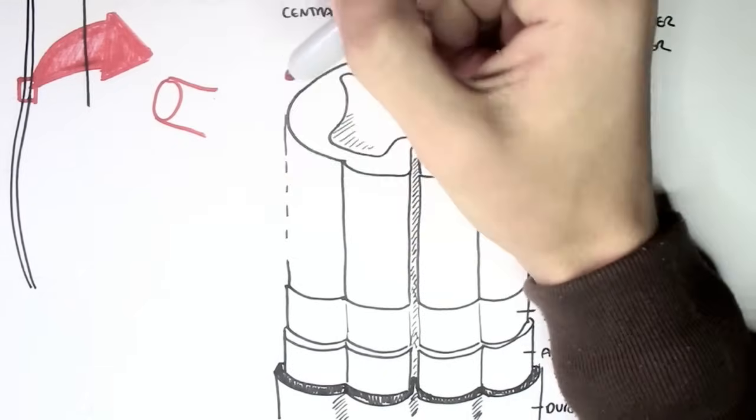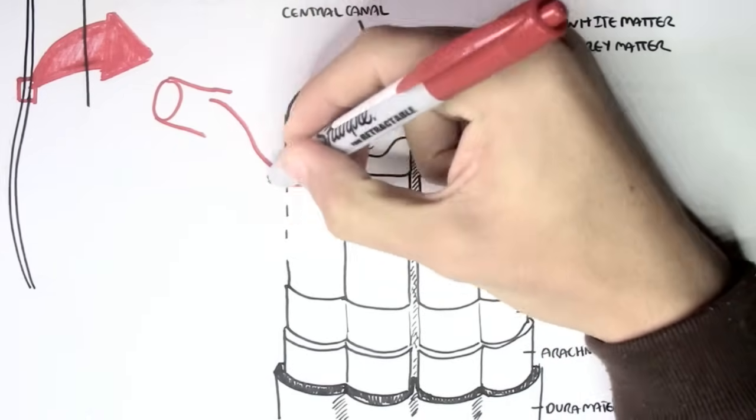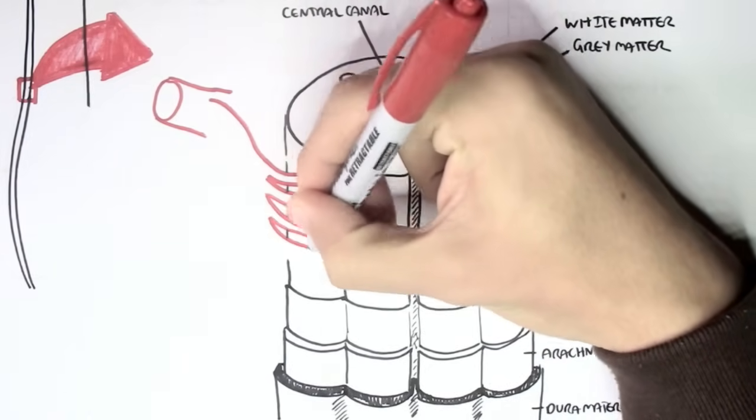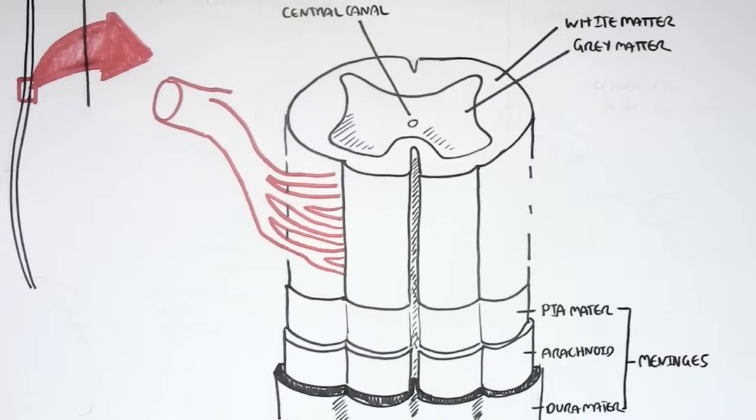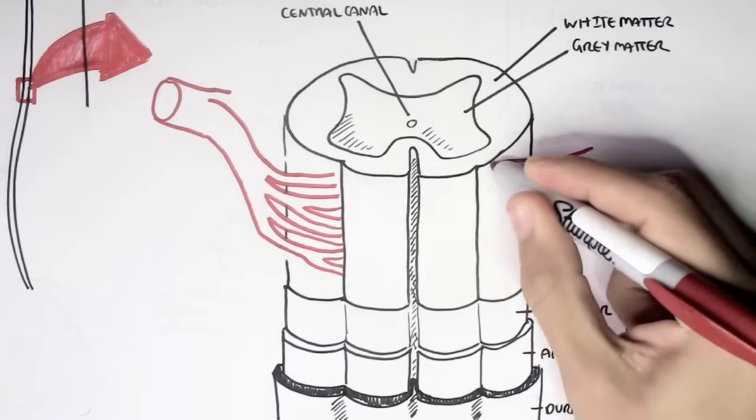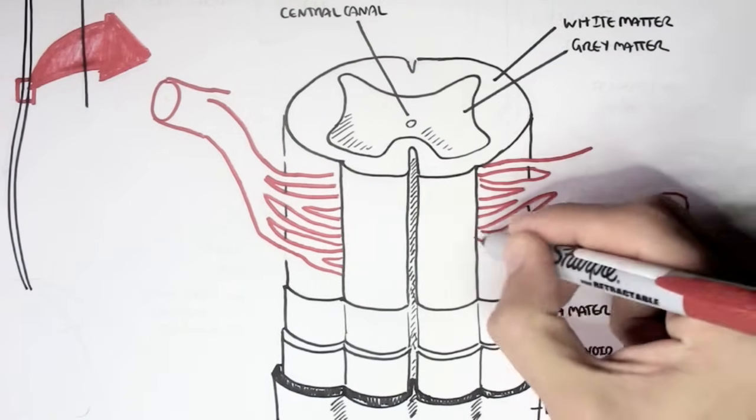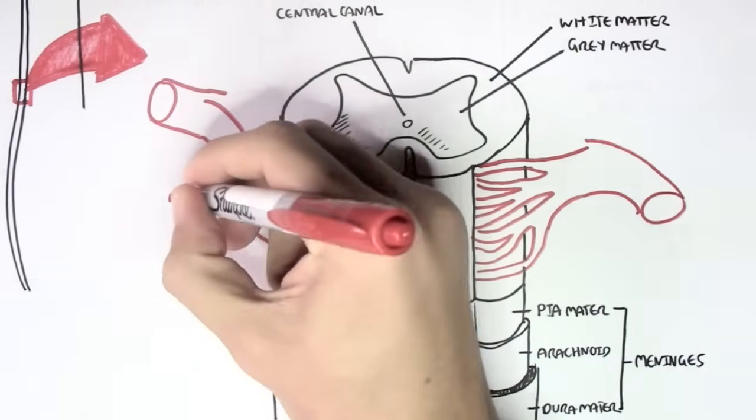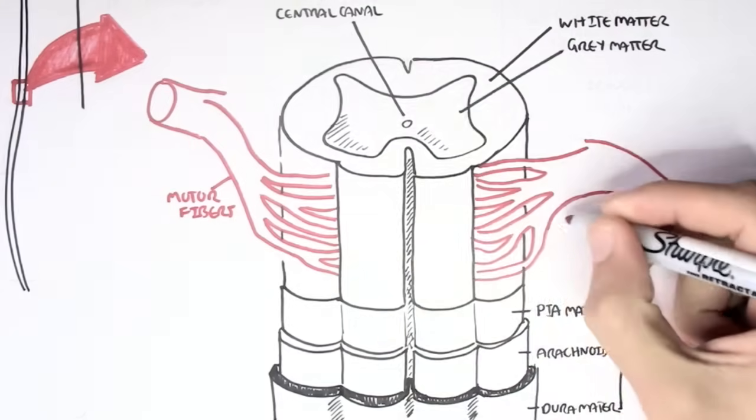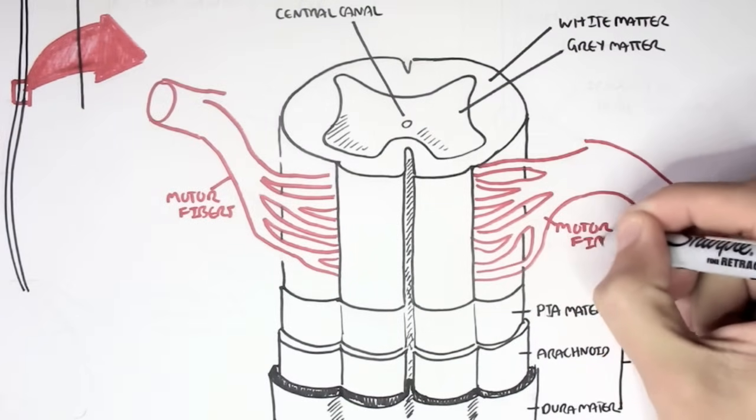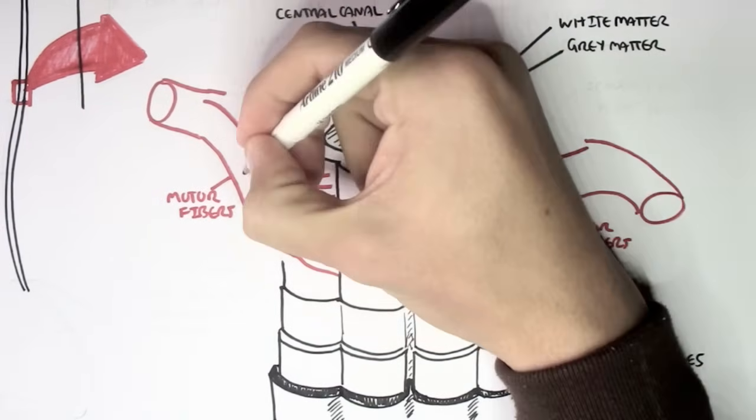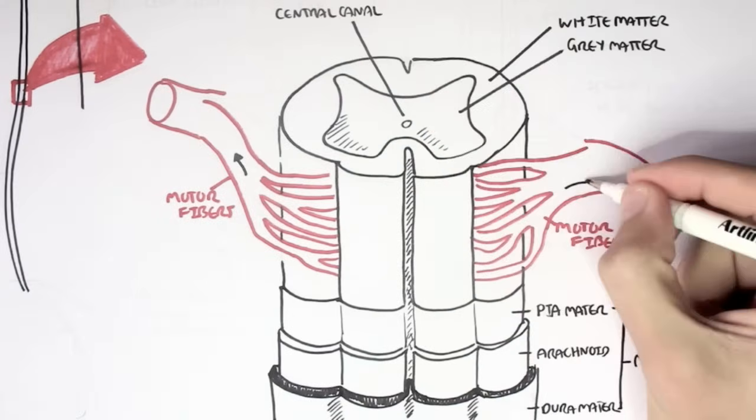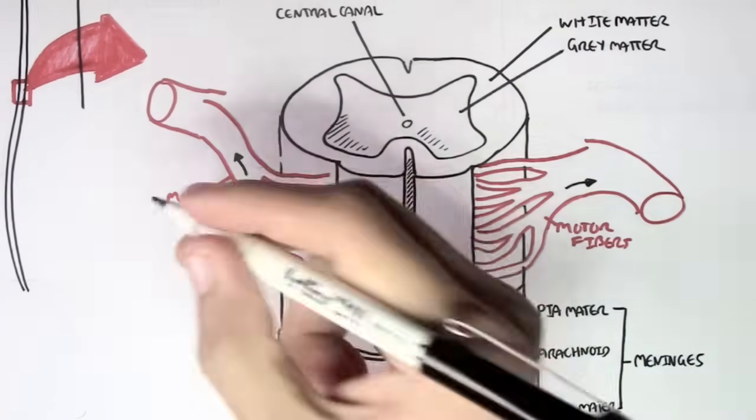Now these red tracks I'm drawing right now are nerve fibres. These tracks are coming out from the front of the spinal cord. When they are in the front, they are called motor fibres, meaning that these fibres carry information out of the spinal cord, not into the spinal cord. So information is leaving out, as indicated by this black arrow here.